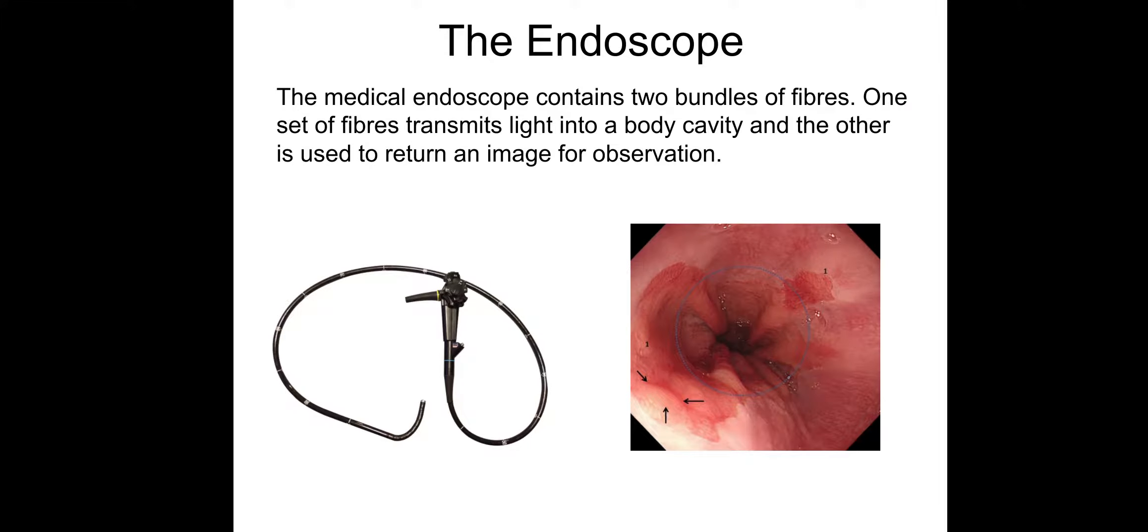So last but not least, just some information on the endoscope. So it's just a utilization of the phenomena, total internal reflection. There's an endoscope on the left. And all that happens is light enters, undergoes total internal reflection and is sent down the tube, comes back up, and allows doctors to look inside the human body. So the endoscope, the medical endoscope, contains two bundles of fibers. One set of fibers transmits light into a body cavity, and the other is used to return an image for observation. So this image on the right is an esophagus. That's the part of the body which food goes down if you don't do biology. And this type of affliction is called Barrett's esophagus, which is a precancerous condition, I believe. So endoscope is very useful. Gives doctors a lot of information.